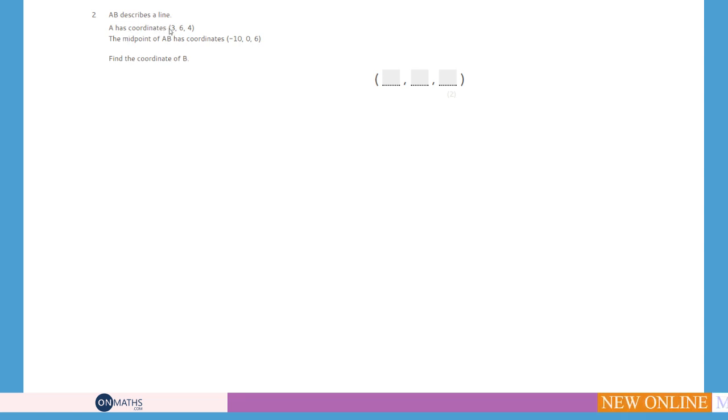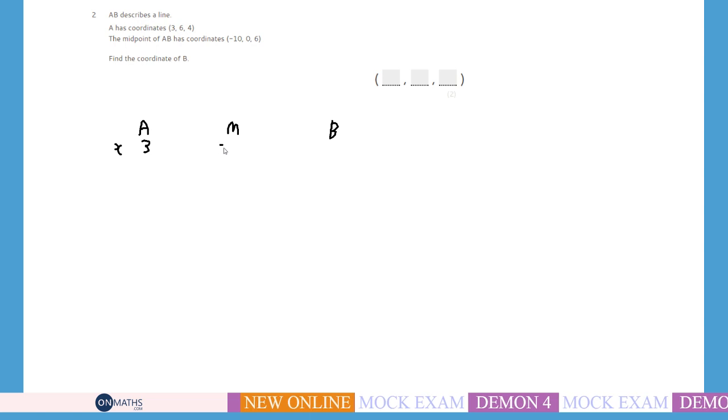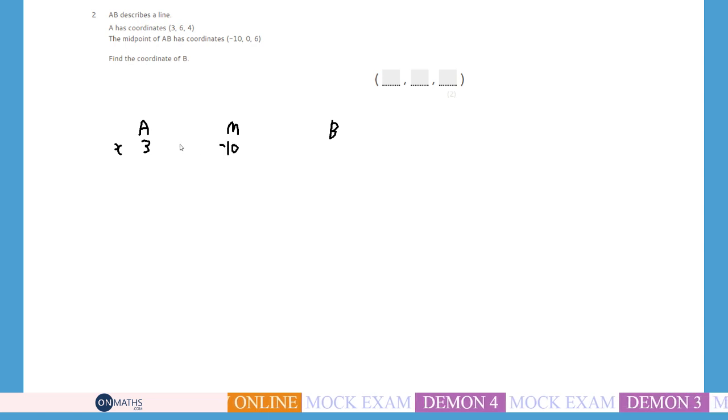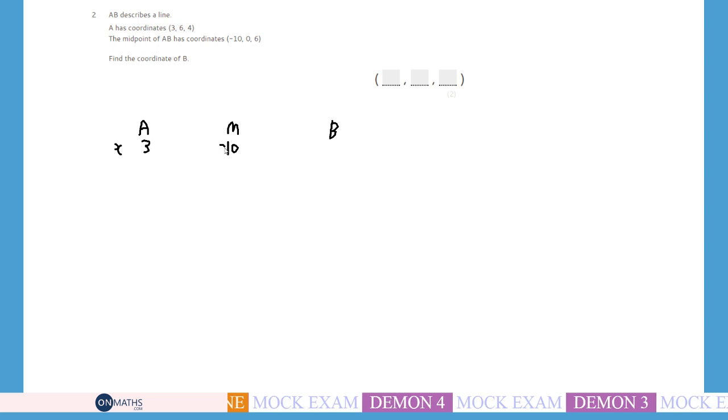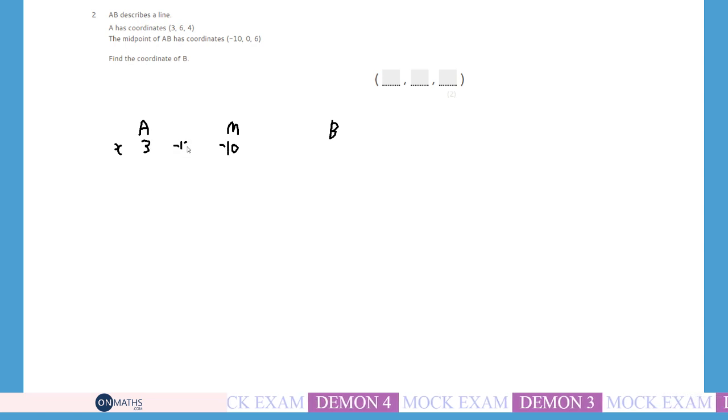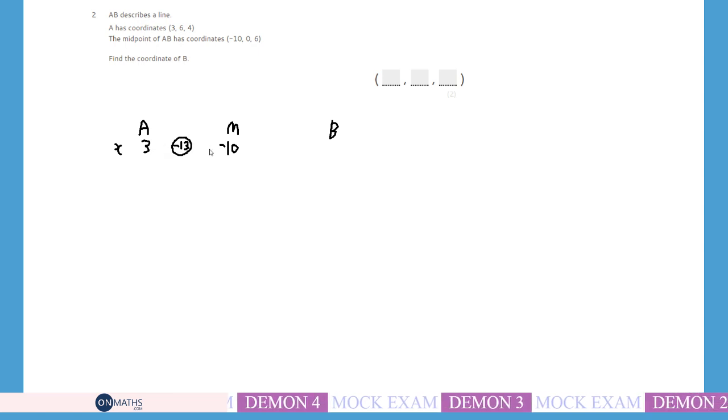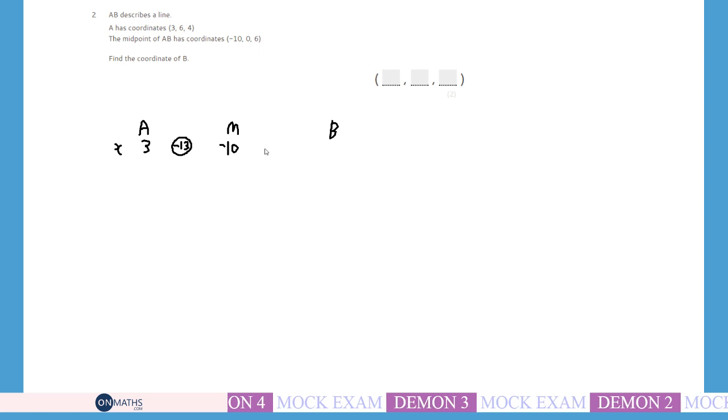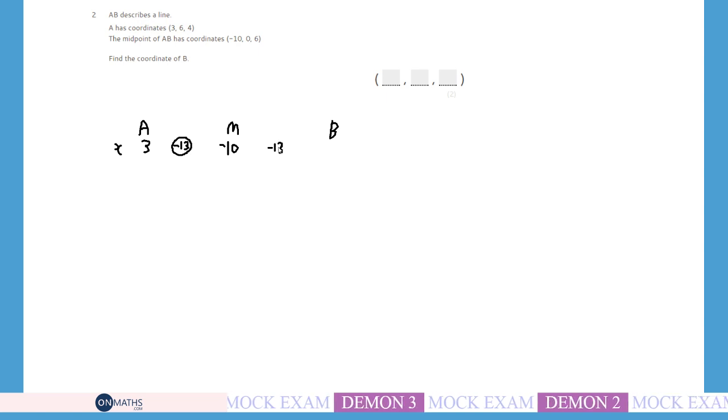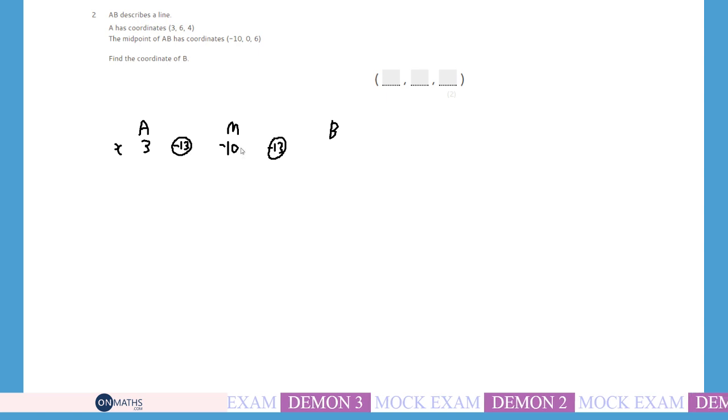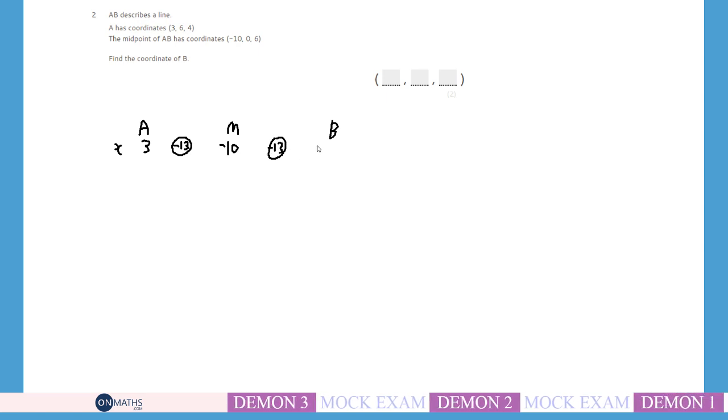So A has the coordinates, the X value is 3 at A. And then it travels along the line and halfway to where it gets to B, it gets to our midpoint. And at that midpoint it is minus 10. So how far has it travelled to get from 3 to minus 10? Well it's gone down 13 because to get from 3 to minus 10 we go down 13. Therefore it's going to go down another 13 on the way to B. So minus 10 take away 13 is going to be minus 23.